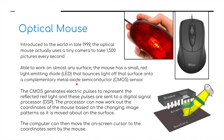The mouse has a small red LED diode inside that bounces light off the surface onto a Complementary Metal Oxide Semiconductor, also known as a CMOS sensor. The CMOS generates electric pulses to represent the reflected red light, and these pulses are sent to a Digital Signal Processor. The processor can then work out the coordinates of the mouse based on the changing image patterns as it moves across the surface.